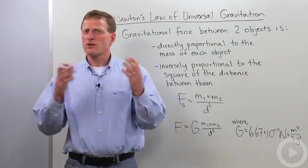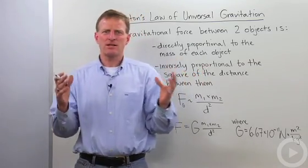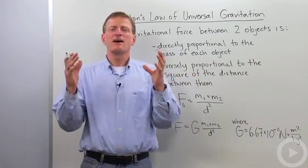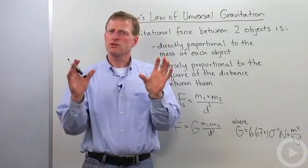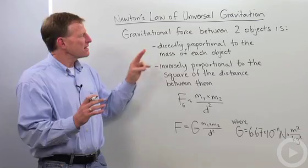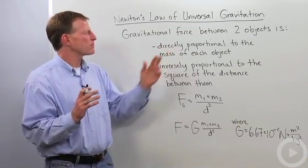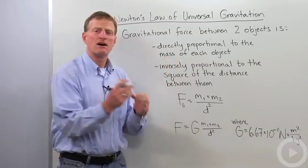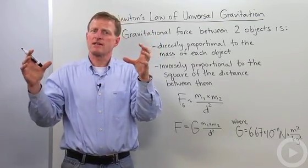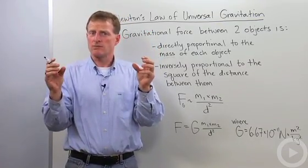He just was one that realized that gravity applies to any objects anywhere in space. But he also realized that the gravitational force between two objects depended on two things. The first thing he found that the gravitational force is directly proportional to the mass of each object. So two larger objects are going to have a stronger gravitational force than two small objects.